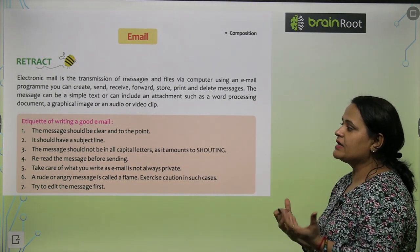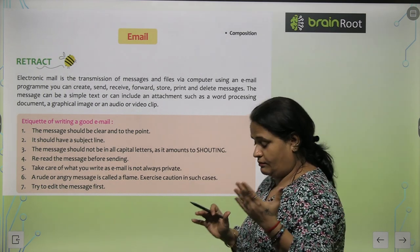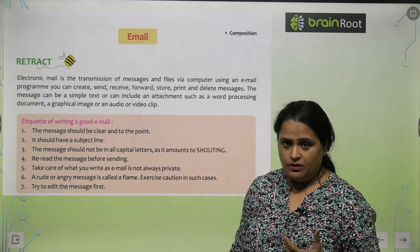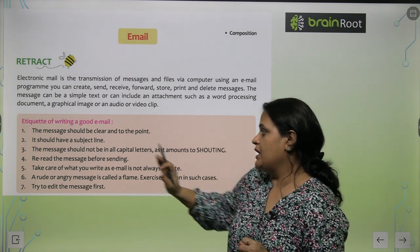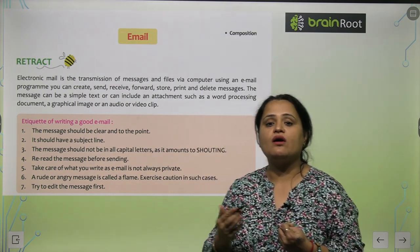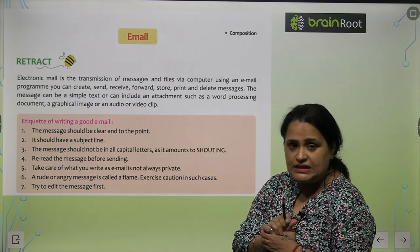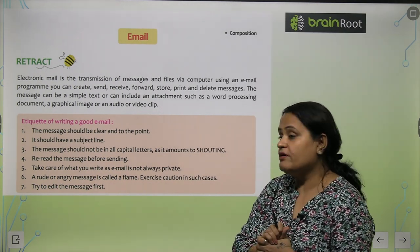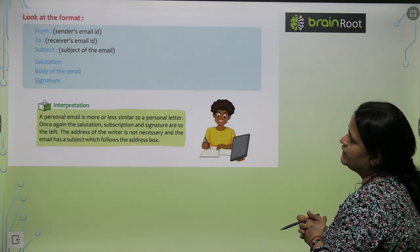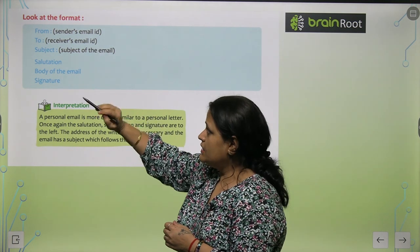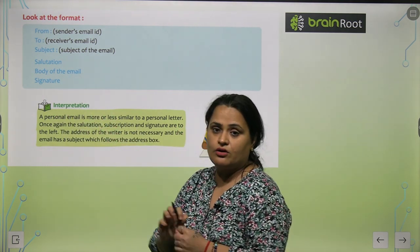To write a good email, keep these points in mind: the message should be clear and to the point — we do not write a very long email if it is not necessary. It should have a subject line. The message should not be in all capital letters as it amounts to shouting. Reread the message before sending. Take care of what you write, as email is not always private. A rude or angry message is called a flame — exercise caution in such cases. Try to edit the message first. The format includes the sender's email ID, receiver's email ID, subject, salutation, body, and signature.